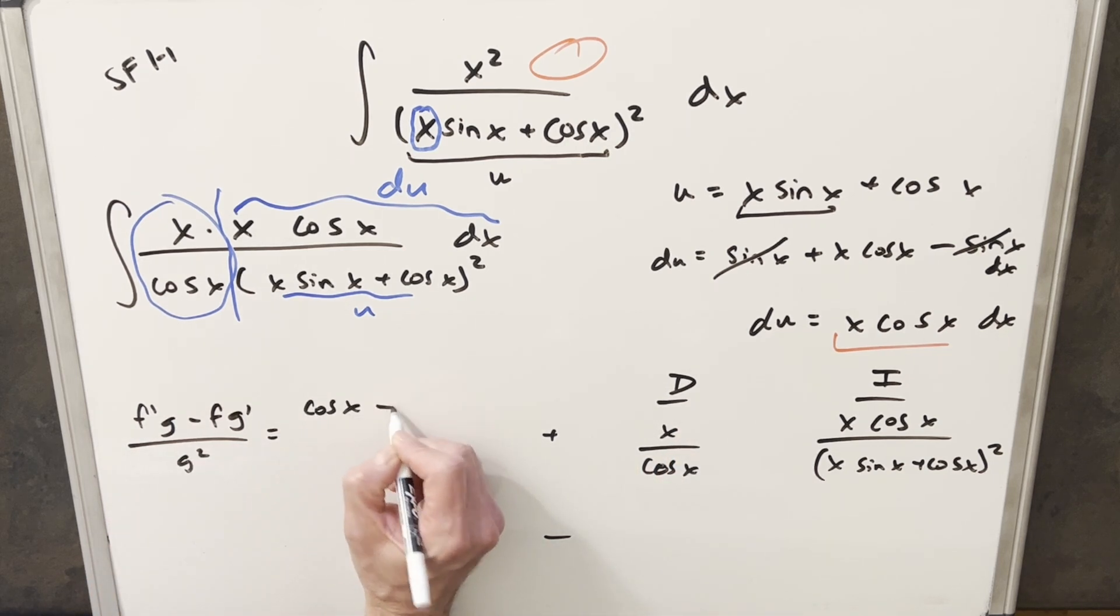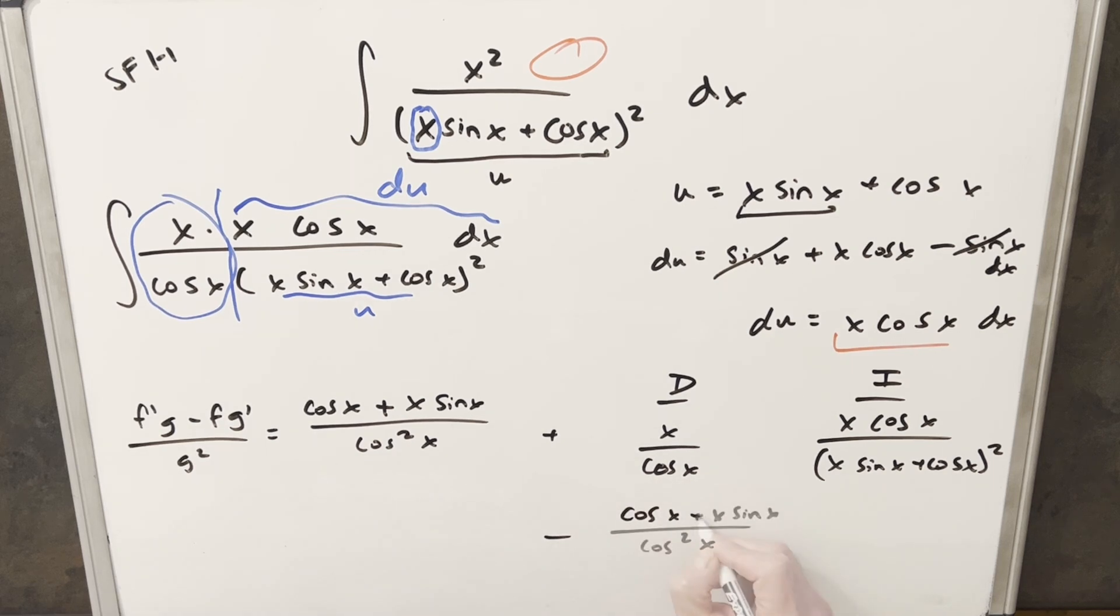And then the second part, we're going to have our f, which is x. Derivative cosine x for g prime, that's going to be minus sine x. So we'll take the minus out here and write it as a plus. And then g squared, that's just going to be the denominator squared, which is cosine squared. Okay, so that's our derivative for this thing. Let me just copy that in here.